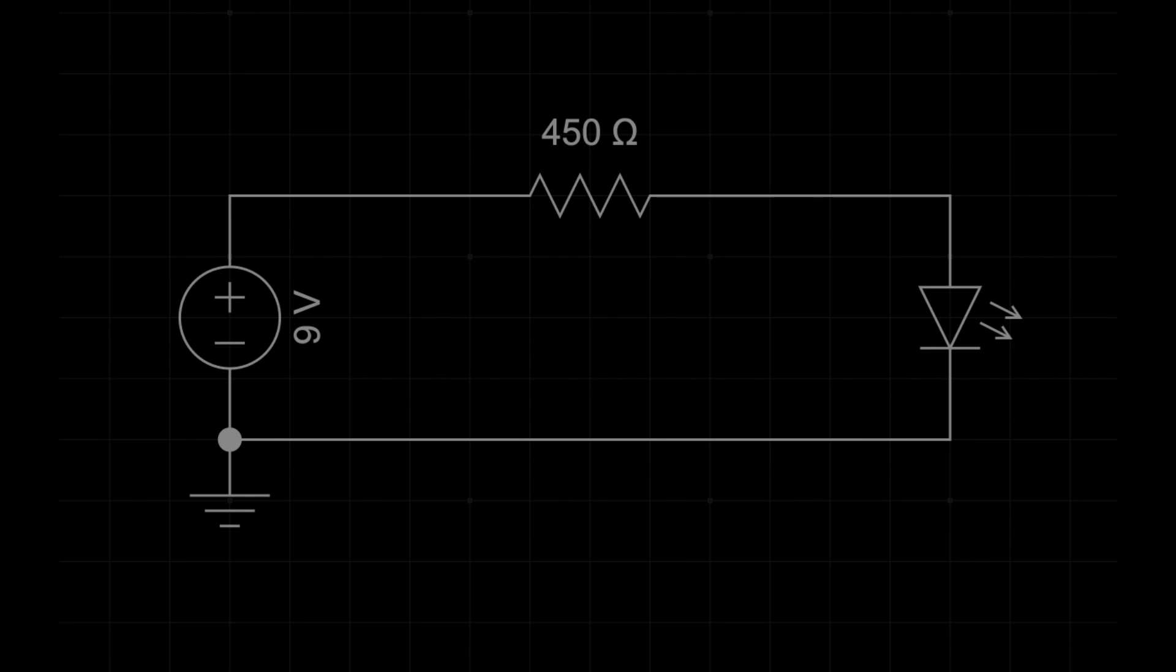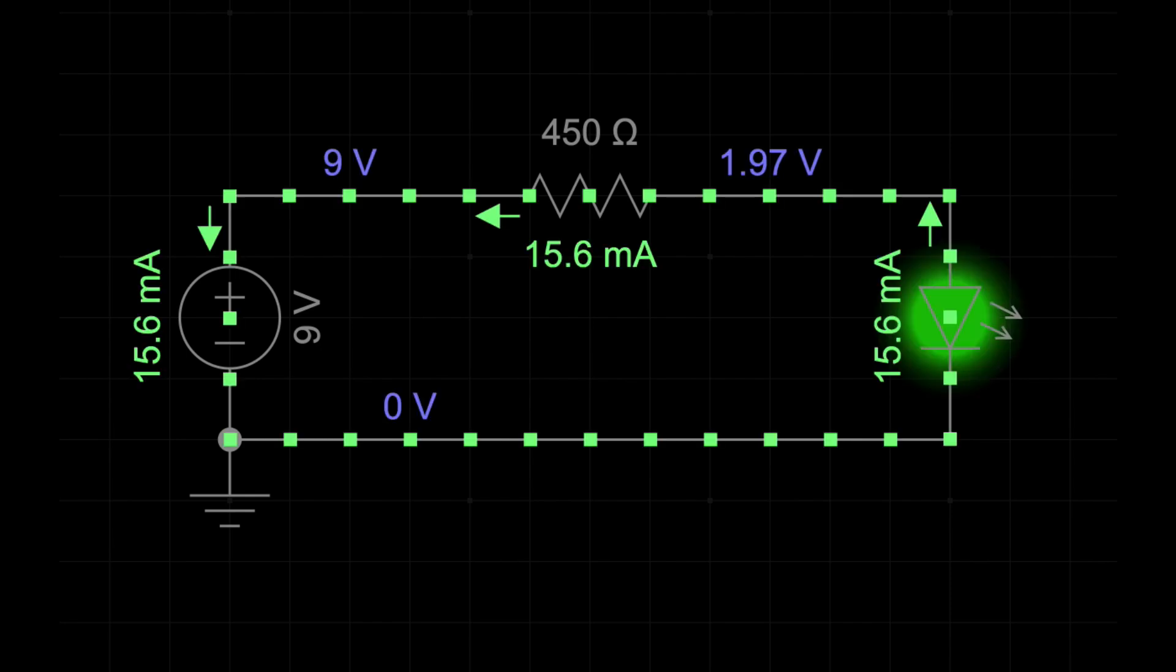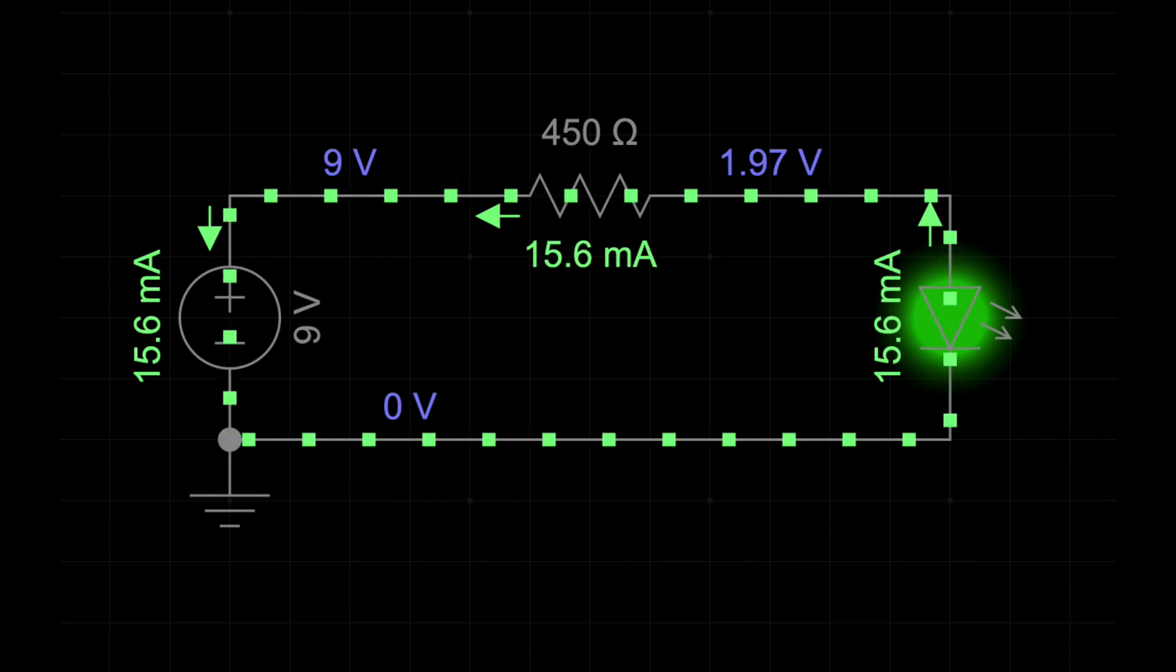When a circuit is connected to the battery, this potential difference causes electric charges, or electrons, to flow from the negative terminal to the positive terminal, creating an electric current.